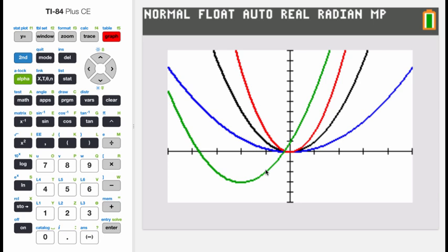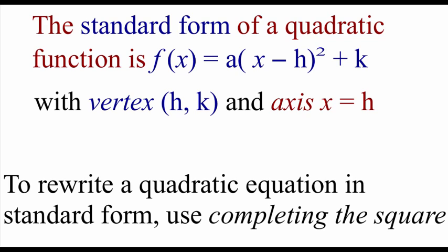Now earlier I mentioned something called the standard form of a quadratic function. The base definition for standard form is f of x equals a times x minus h, in parentheses, squared plus k. The nice thing about standard form is it lets us know right away where the vertex of our function is — we just look at those h and k values. It also tells us where the axis of symmetry is: x equals h, since the axis of symmetry is a vertical line.